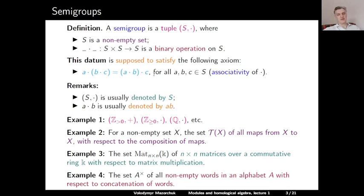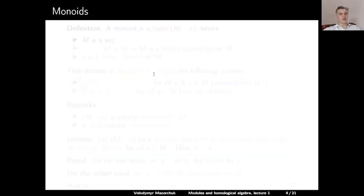Example four: the set A⁺ of all non-empty words in an alphabet A with respect to concatenation of words. This is also a semigroup — the semigroup of words. We consider a non-empty alphabet A and all non-empty words in this alphabet. This is a semigroup.